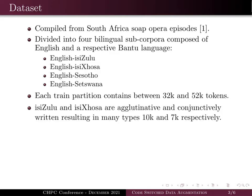IsiZulu and IsiXhosa are agglutinative and conjunctively written, which results in many word types to model — between seven and ten thousand for the two respective languages — which is high in proportion to the number of tokens in the training partitions.